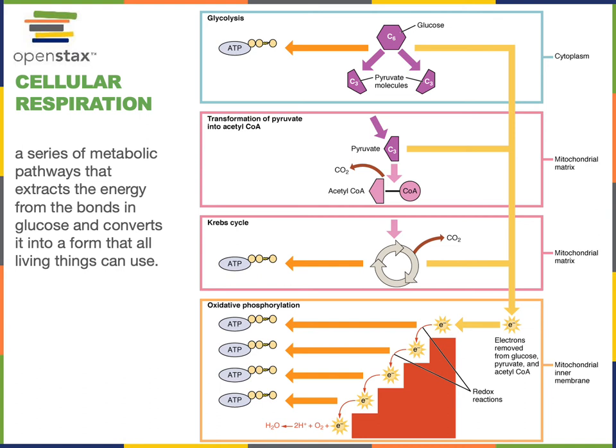The high energy electrons will ultimately be transferred to oxygen in order to produce water. So oxygen is the oxidizing agent for the overall process of glucose catabolism that will accept high energy electrons that ultimately come from the oxidation of glucose.